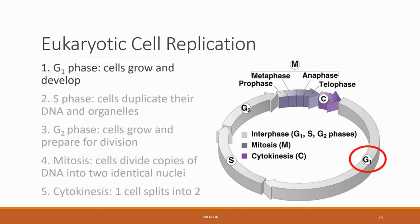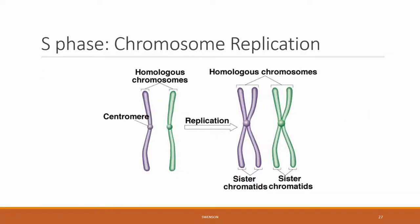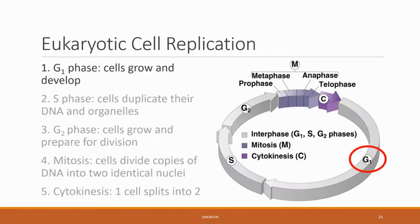To understand chromosomal replication in eukaryotes, let's look at their overall cell replication. This replication can be broken down into several steps: G1, S, G2, and then M and C. Steps G1, S, and G2 are called interphase.